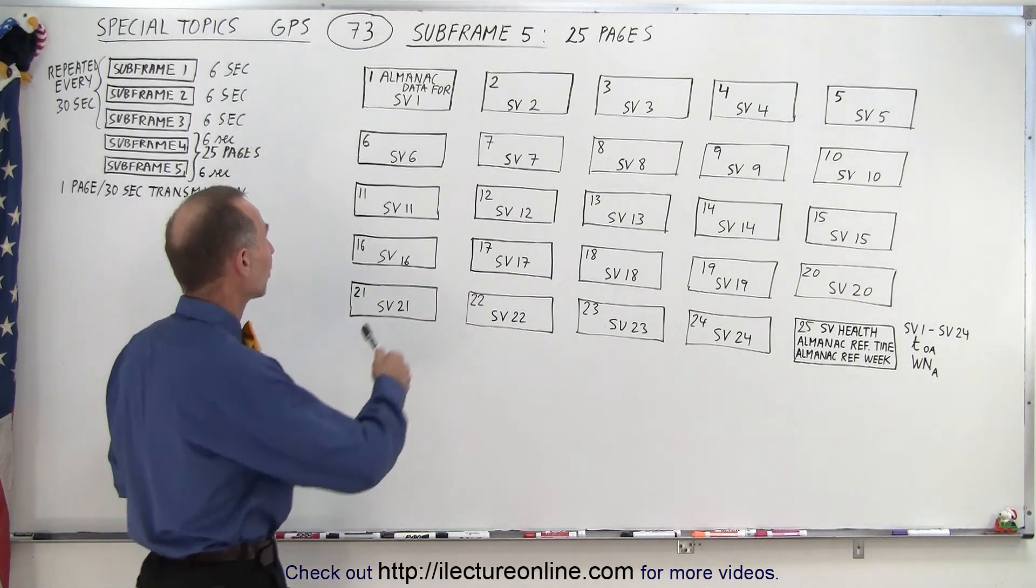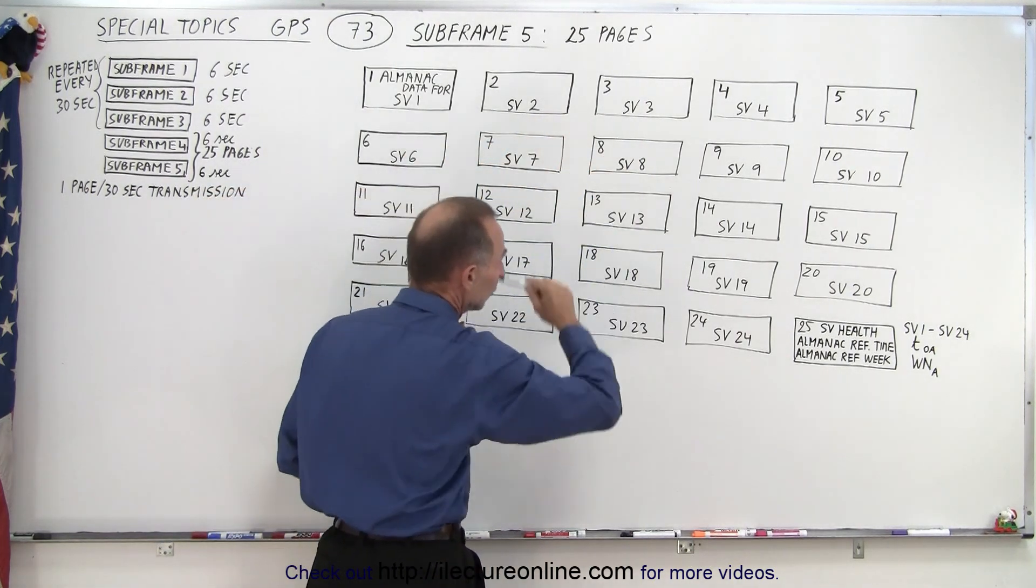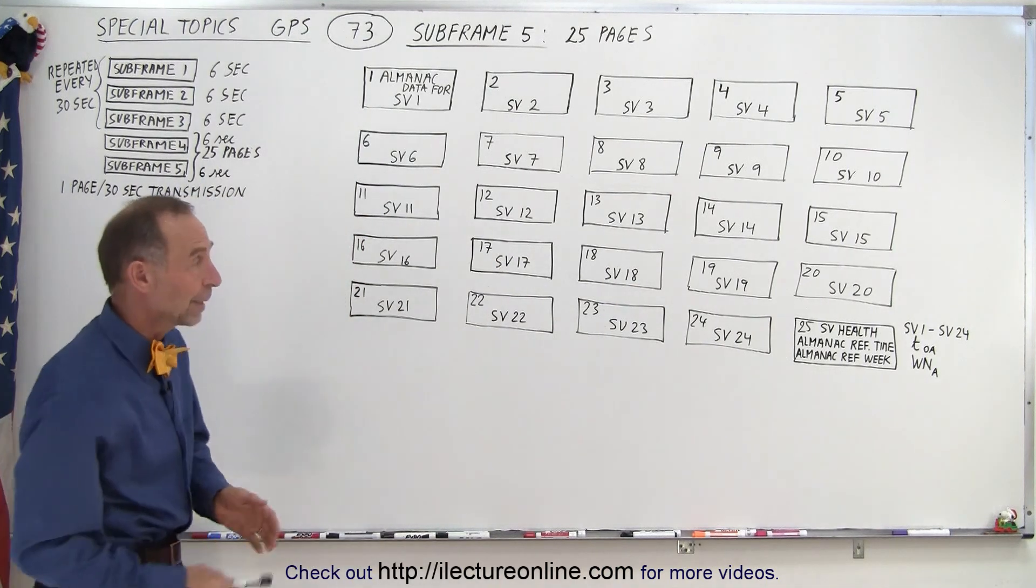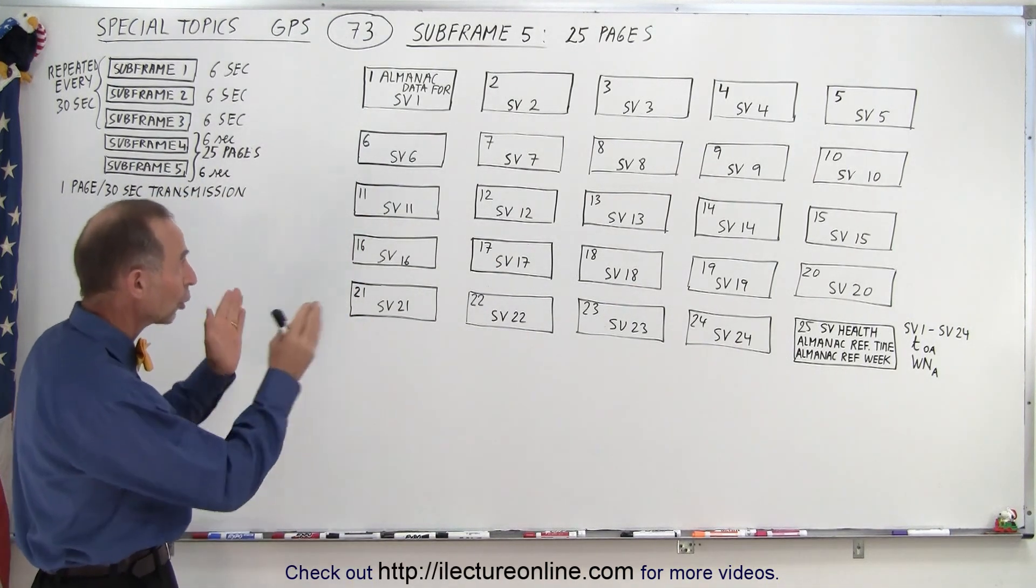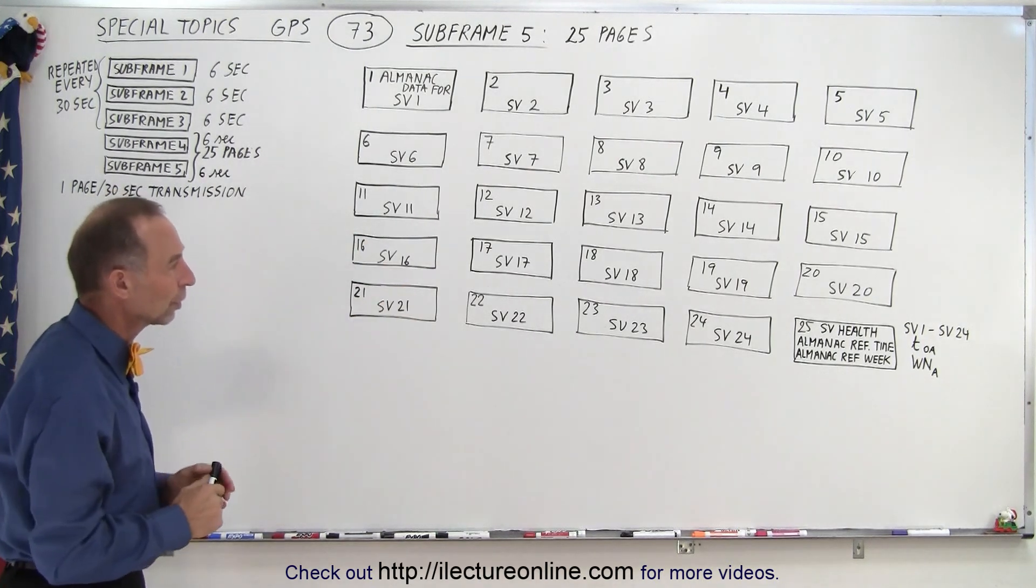You can see that here's the almanac data for SV1, for SV2, for SV3, all the way to SV24 for the first 24 pages. The data structure for all of those pages is identical for all 24 pages.